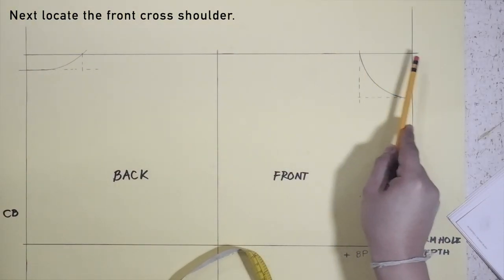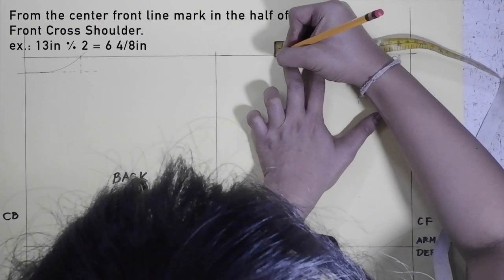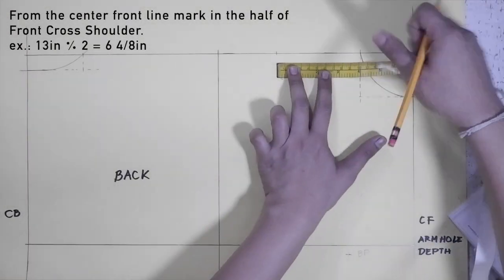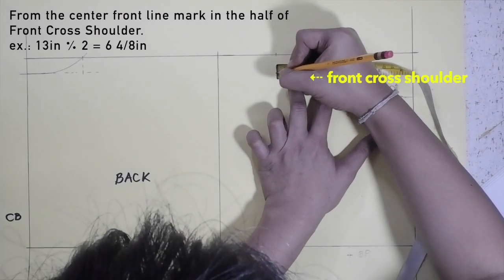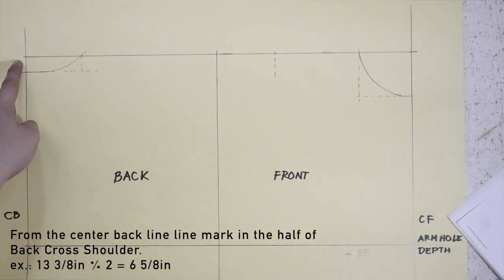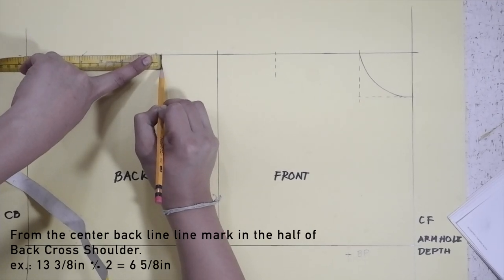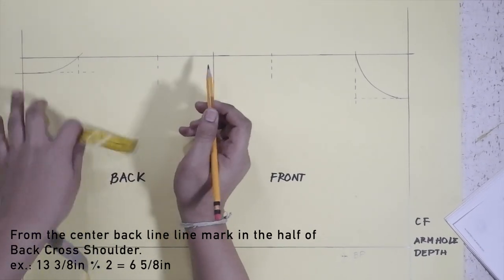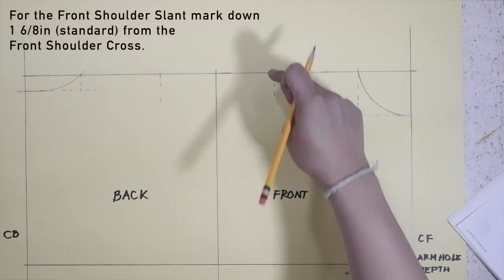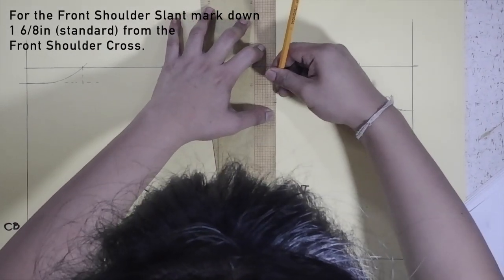Step five: shoulder point. Next, locate the front cross shoulder. From the center front line, mark in the half of front cross shoulder. From the center back line, mark in the half of back cross shoulder. From the front cross shoulder, mark down 16/8 inch — this is the standard measurement for the front shoulder slant.